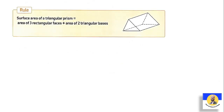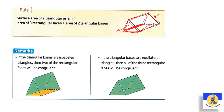الرول بتاعتنا: نجيب الـ area of three rectangular faces والـ area of two triangular bases. الـ two triangles بيكونوا زي بعض. الـ two rectangles اللي على اليمين واليسار بيكونوا زي بعض. أما الـ base بيكون الـ area بتاعته مختلفة. يبقى عندنا: two triangles زي بعض، two rectangles زي بعض، وone rectangle different. ده بالنسبة للـ triangular prism.